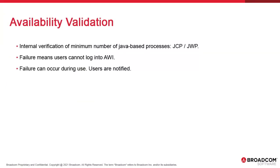AE has an internal process availability check. It checks that sufficient JCP and JWP process resources are available before allowing a user to log in. Even once connected, this failsafe can prevent users from performing certain tasks because of a lack of resources, and users are notified. It's fully automated and requires no configuration.